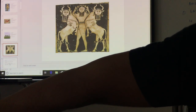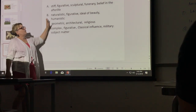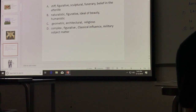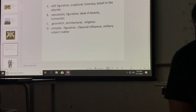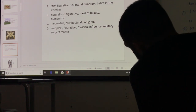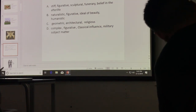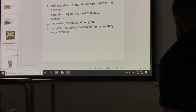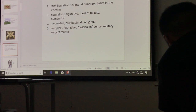These describe the four major movements that come next. What is stiff, figurative, sculptural, funerary — meaning relating to death — and with a strong belief in the afterlife? That's Egyptian. What is more naturalistic, with contrapposto, figurative, the ideal of beauty, and humanistic? That is definitely Greek. You associate humanism with Greek.